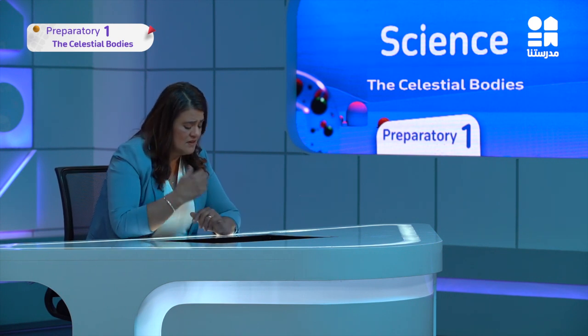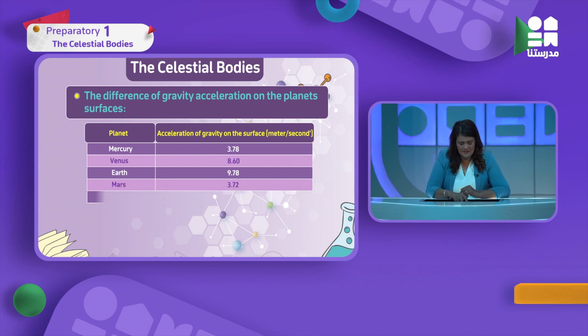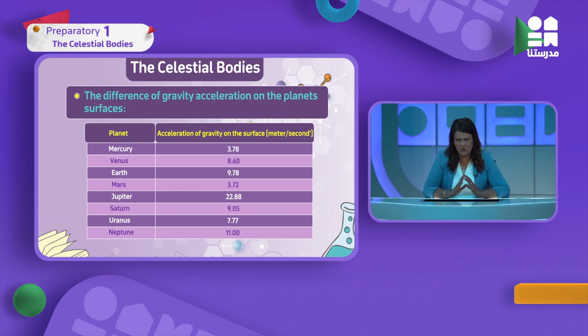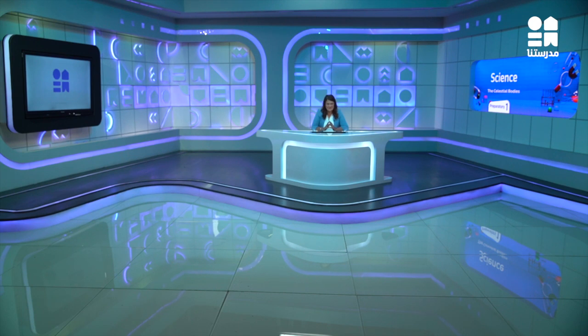Gravity differs from place to place - it is not constant. Here is a table I want you to read the numbers and arrange accordingly, showing the difference in gravity between the inner and outer planets. We consider ourselves done with this lesson. I hope you understood it - see you next lesson, inshallah. Bye bye.